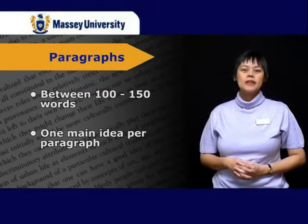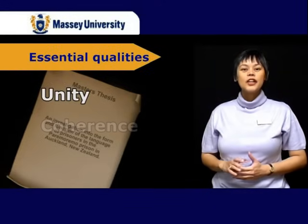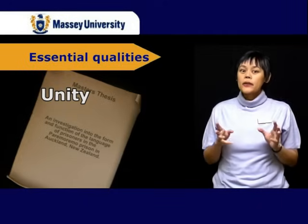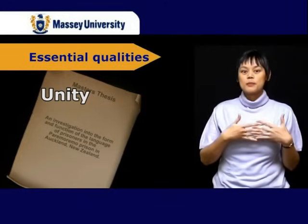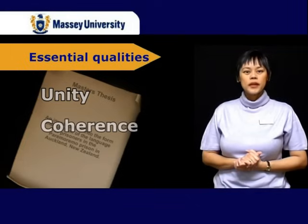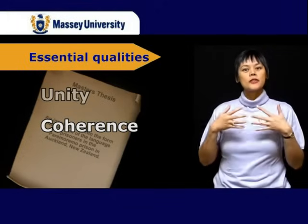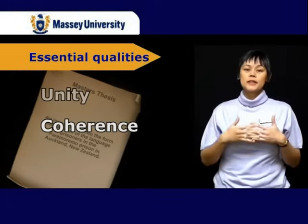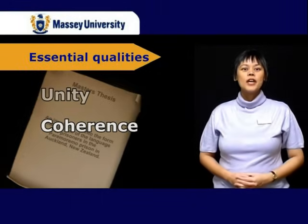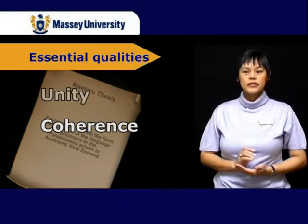Once we have our paragraphs sorted out, we can look at organizing them into the thesis. There are three essential qualities for writing a good thesis: unity, coherence, and development. Unity means that when ideas and paragraphs are strung together and the relationship between them is clear, the whole writing is said to have unity. A piece of writing has coherence when there is a clear relation between paragraphs — when the paragraphs are strung together and the connection between them is clear, then it is coherent. In other words, everything fits together convincingly.